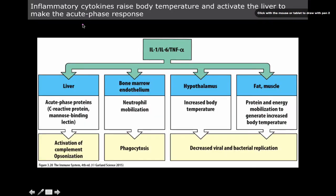As I talked about the acute phase response proteins, inflammatory cytokines are involved in raising the body temperature: interleukin-1, interleukin-6, and tumor necrosis factor alpha. These are all going to activate the liver to make the acute phase response proteins.